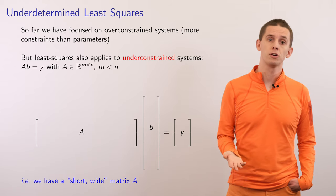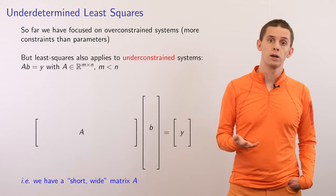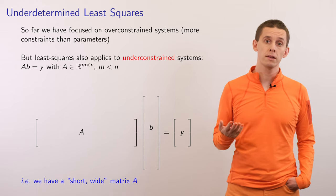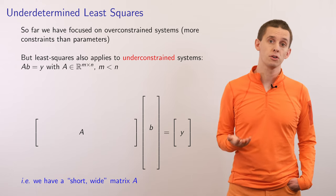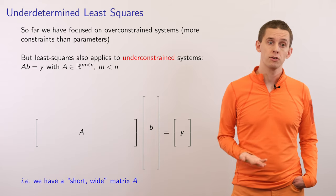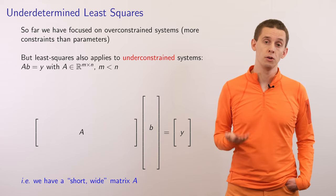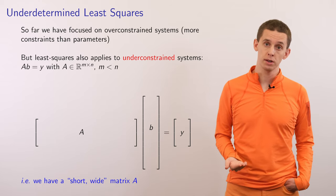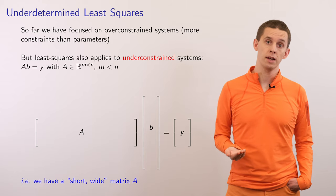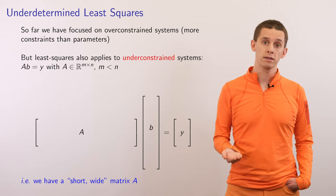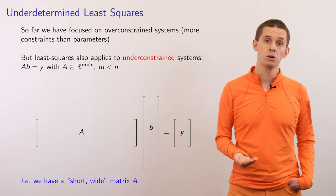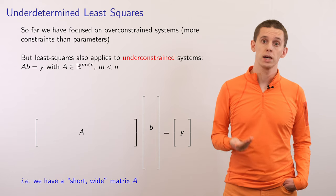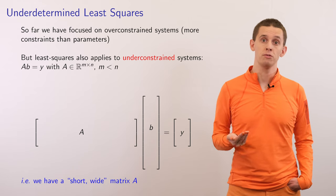So far, we've focused on over-constrained systems, where there are more constraints from data than we have parameters in our model. But we can actually apply the least squares methods to under-constrained systems as well. Suppose now that we're looking at an under-constrained system Ab equal y, where A is an M by N matrix and M is less than N. So if we write out this system, we end up with a short wide matrix A, a long parameter vector b, and a short vector of data y.